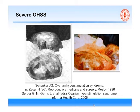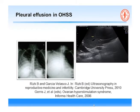The two main features of OHSS are enlarged ovaries and third-space fluid. Third-space fluid means ascites in the peritoneal cavity, pleural effusion in the lungs, and potentially a few other spaces.